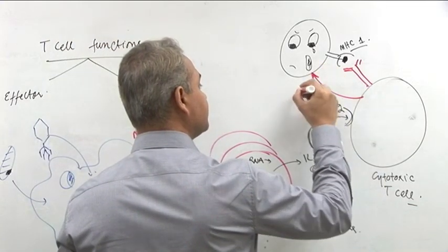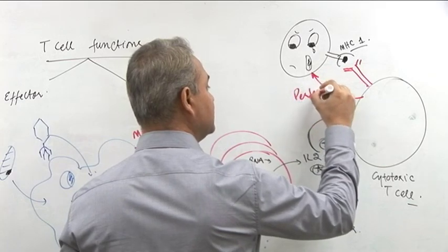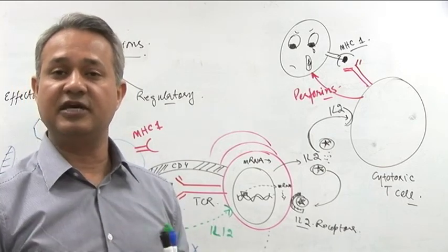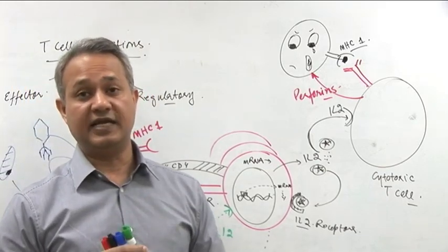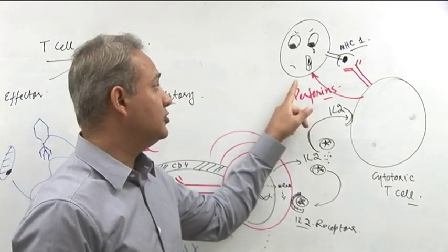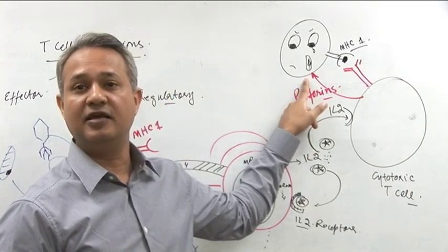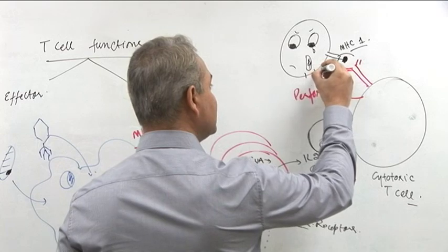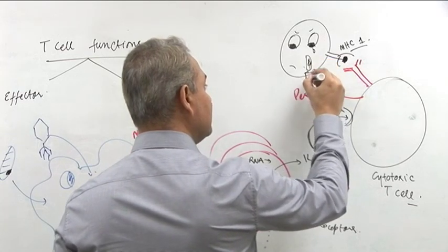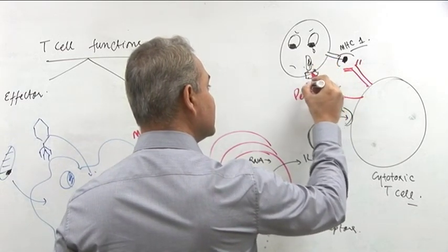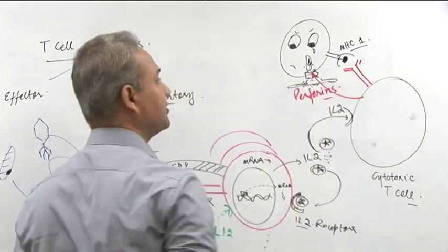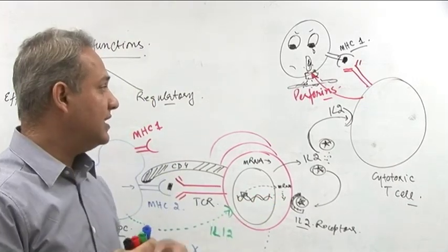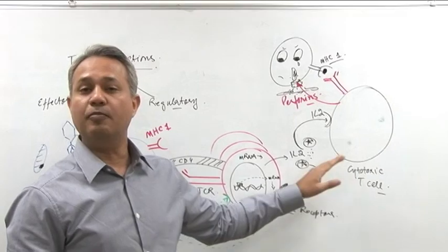What it is going to do is this. It is going to release perforins. Perforins are chemical substances. These are proteins released by the cytotoxic T cells. These are also released by the natural killer cells. And what they do is they create holes in the cell membrane. So once the cell, that is why they are called perforins, they create perforations. So once the holes are created, the cellular substances will be released. So when those cellular substances are released out of the cell, the cell dies.